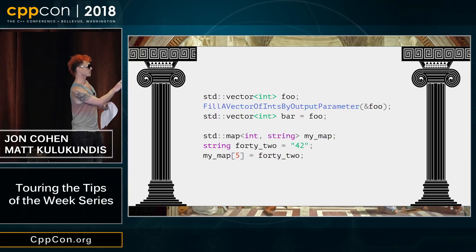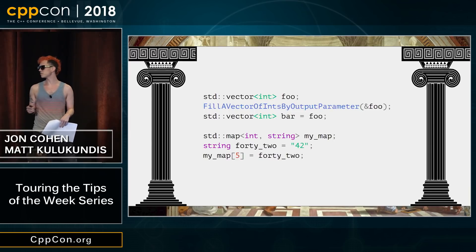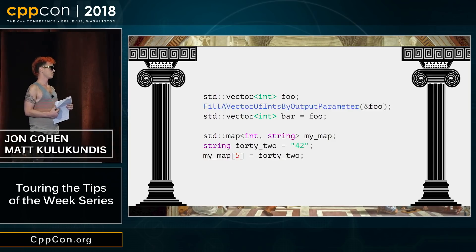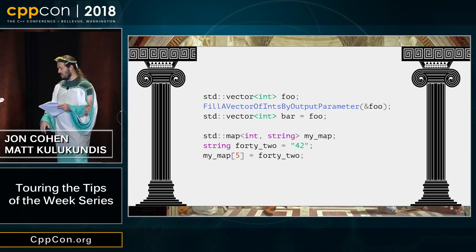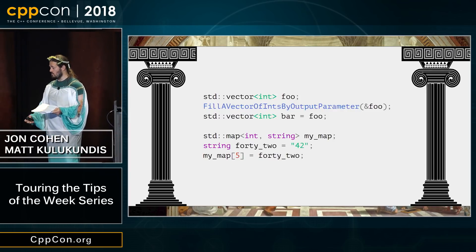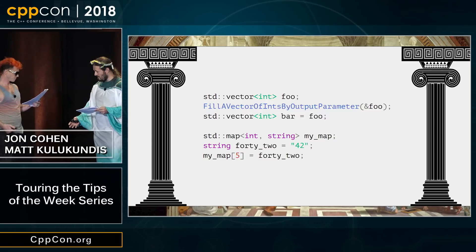So the first one is a copy, because there are two names: bar and foo. Exactly. But the second one, you call it 42, but that's still a copy. Be careful. Didn't we assign the string into a map? We did. So isn't the data also named map sub five? Yeah, I guess it is. If I say map five, I get the string back. And there you have it. If there are two names for the data, it's a copy.